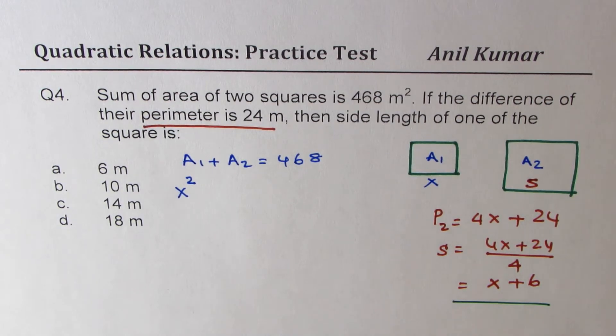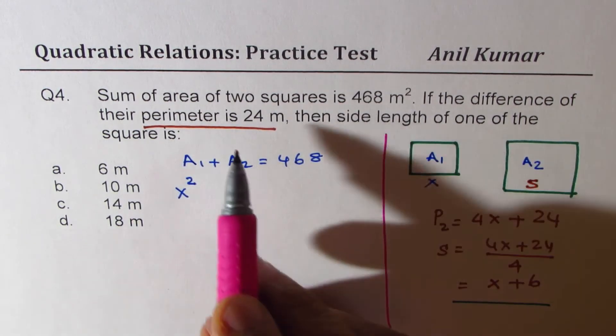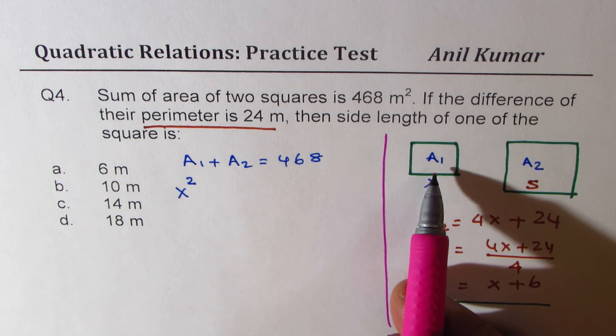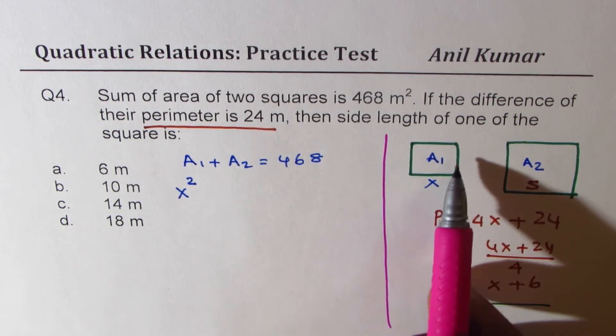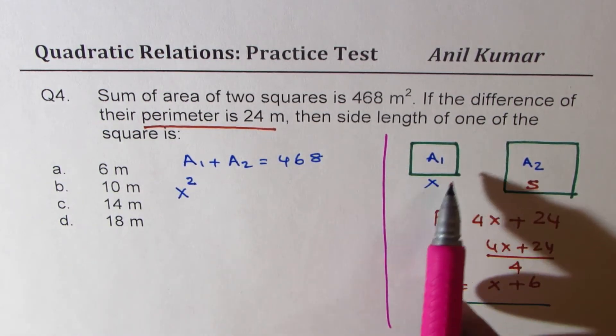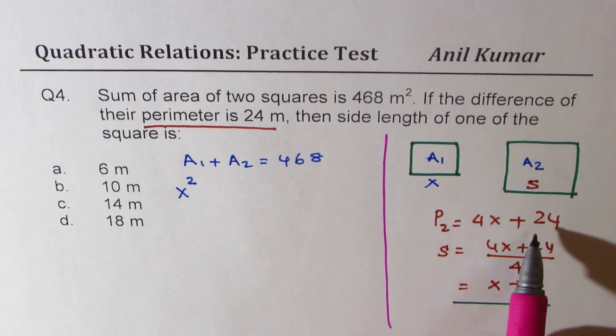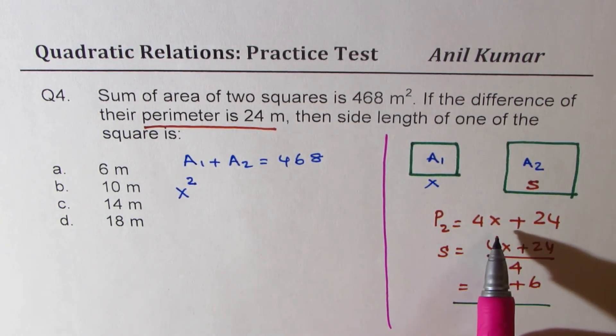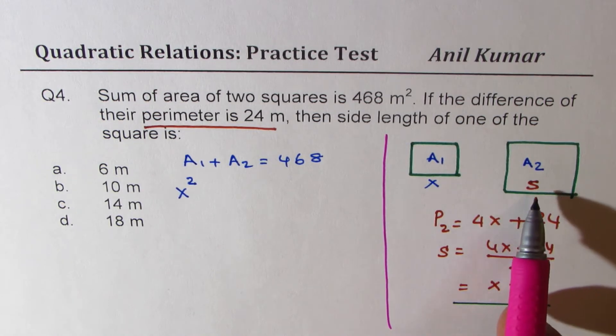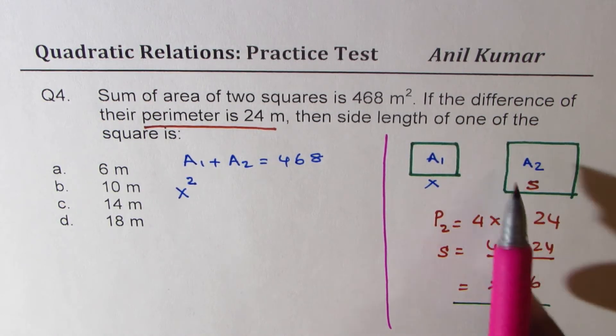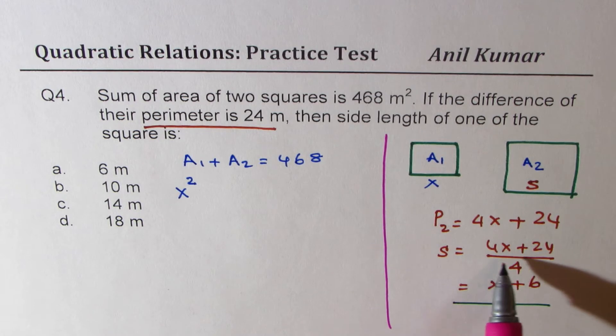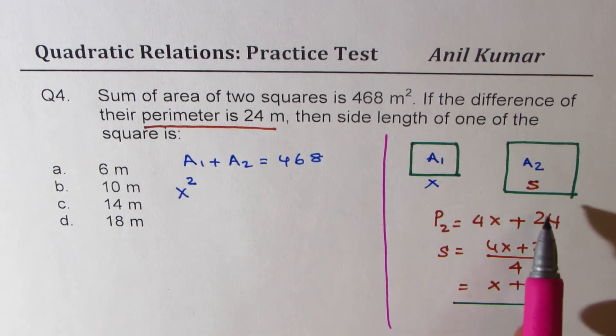So go through it once again. Since the perimeter is 24 more than this first one, perimeter of the first one is 4x, 4 times x. This is 24 more. So we get new perimeter of 24 plus 4x. What should be the side length? One fourth of the perimeter.